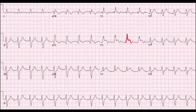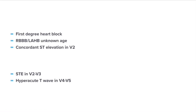In the second ECG of the same patient, we can see ST elevation in leads V2 and V3, and a hyperacute T wave in lead V4. The findings are: first degree heart block, right bundle branch block (RSR' pattern in lead V1), slurred S wave in leads I, AVL, and V6, QRS duration of more than 120 milliseconds, left anterior hemiblock with left axis deviation (QR pattern in leads I and AVL, RS pattern in leads 2, 3, and AVF), and ischemia suggested by concordant ST elevation in leads V2, V3, and hyperacute T wave in leads V4 and V5.